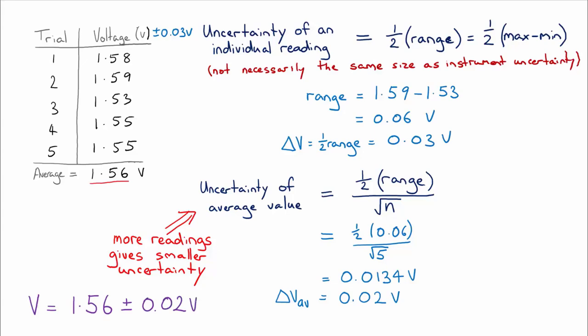And the only other thing I wanted to point out here was that this range that we've got here, 1.56 plus or minus 0.02, suggests that the true, or that average value, lies between 1.54 and 1.58. Now we do have individual readings which are outside of that range, but that's just because of random errors. And by taking lots of data, we can pinpoint that average value with a bit more certainty.